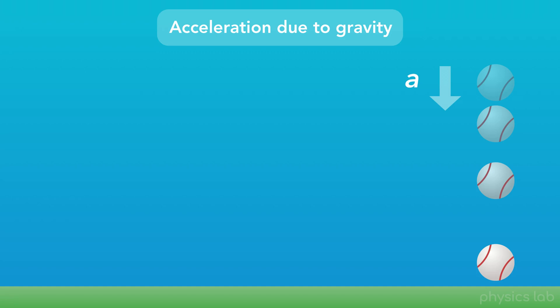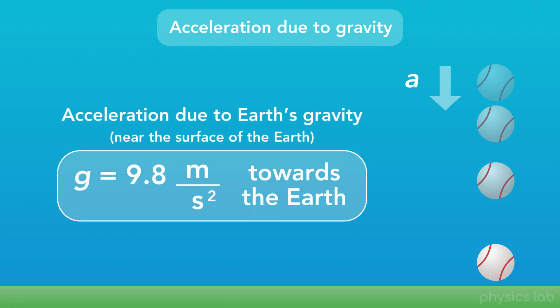We don't need to understand gravity yet, or why this happens, but it's a good time to mention that all objects that are falling with gravity have the exact same acceleration. This acceleration due to Earth's gravity is 9.8 meters per second squared towards the Earth. And we represent this special value using the variable lowercase g. We'll leave it at that for now, and we'll come back to it later.